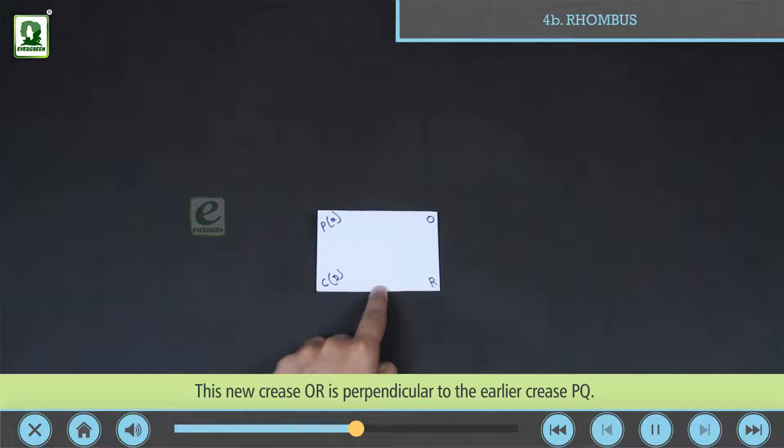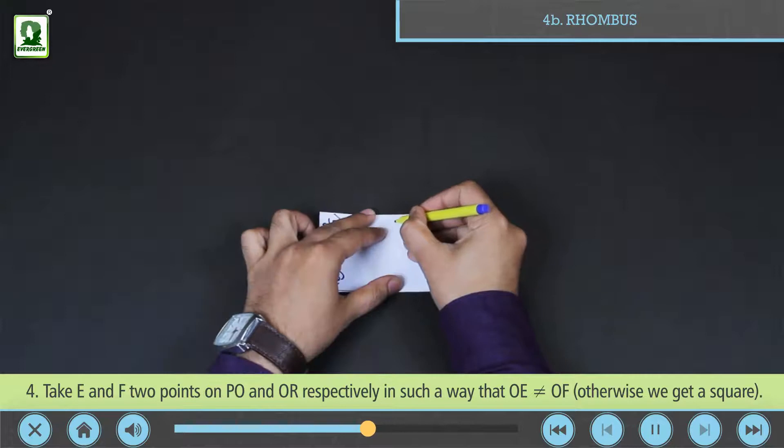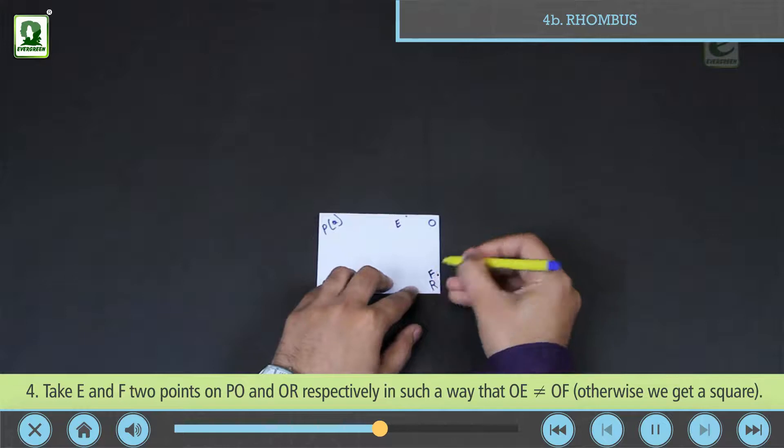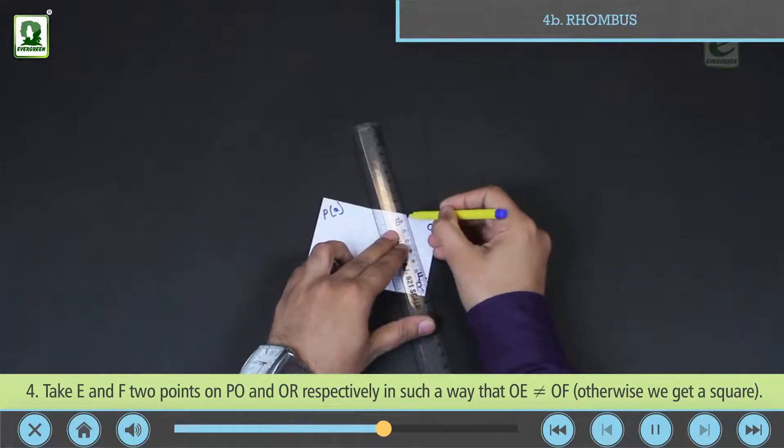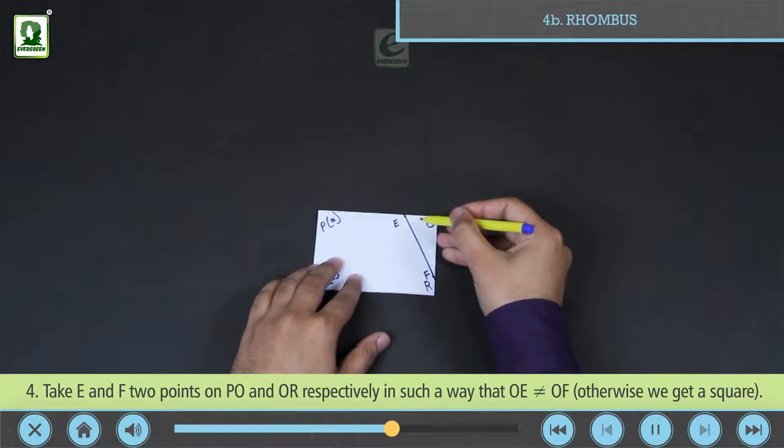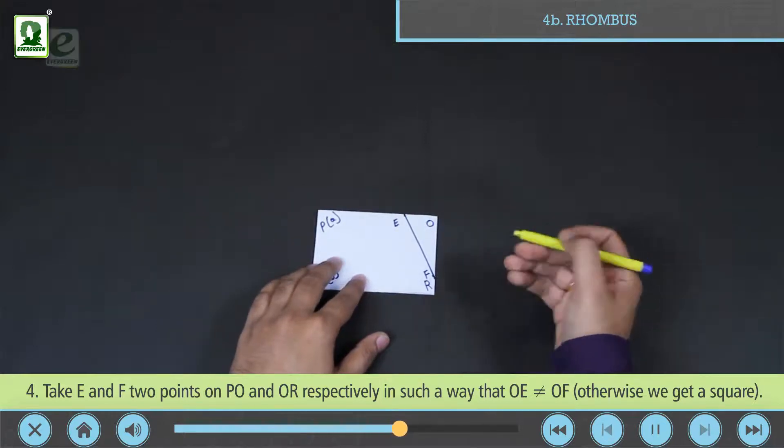Take E and F, two points on PO and OR respectively, in such a way that OE is not equal to OF. Otherwise we get a square.